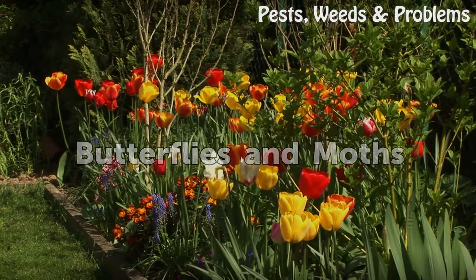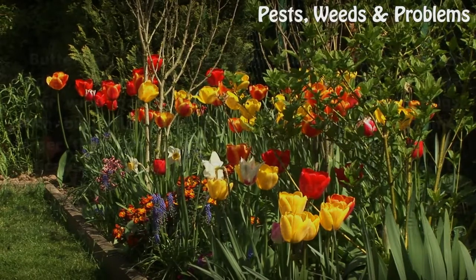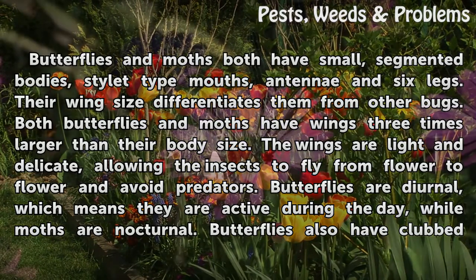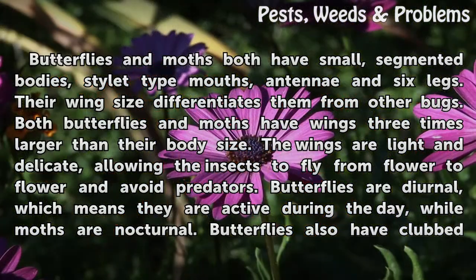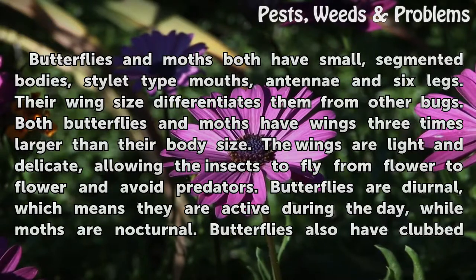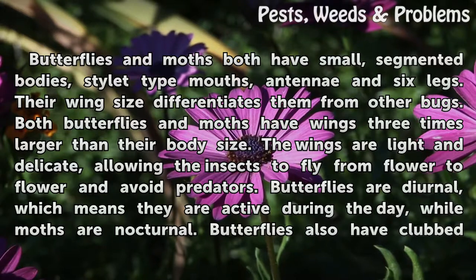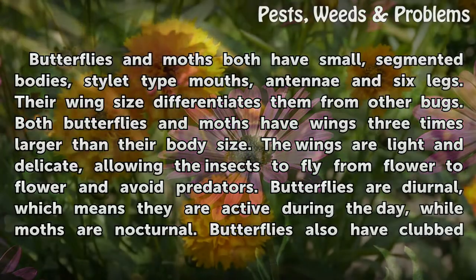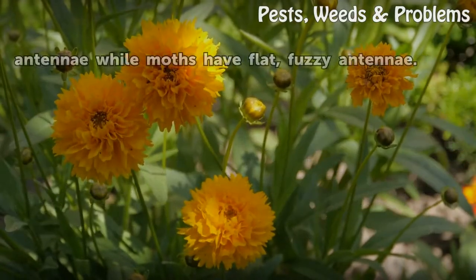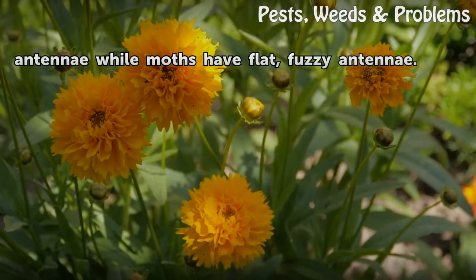Butterflies and Moths. Butterflies and moths both have small, segmented bodies, stylet-like mouths, antennae, and six legs. Their wing size differentiates them from other bugs. Both butterflies and moths have wings three times larger than their body size. The wings are light and delicate, allowing the insects to fly from flower to flower and avoid predators. Butterflies are diurnal, which means they are active during the day, while moths are nocturnal. Butterflies also have clubbed antennae, while moths have flat, fuzzy antennae.